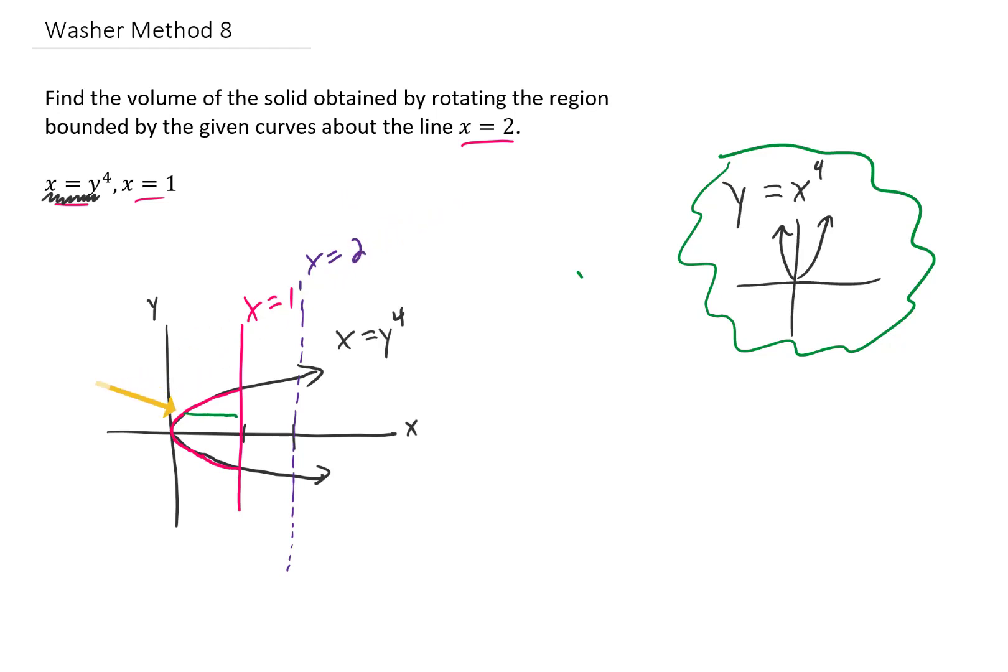That means that we're going to slice this region up like this. We're going to rotate that slice around the axis of rotation. And you'll notice that we do in fact get a washer. The width of each one of these little washers is going to be dy. So we'll be integrating with respect to y.